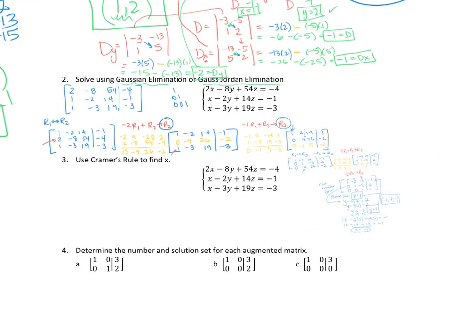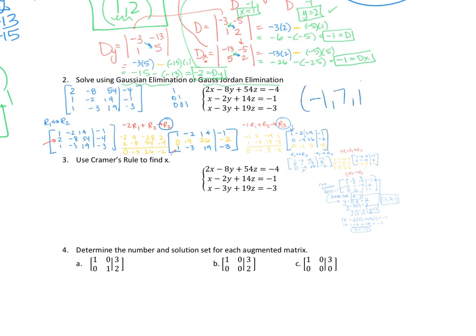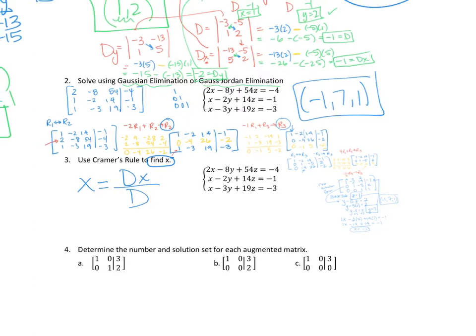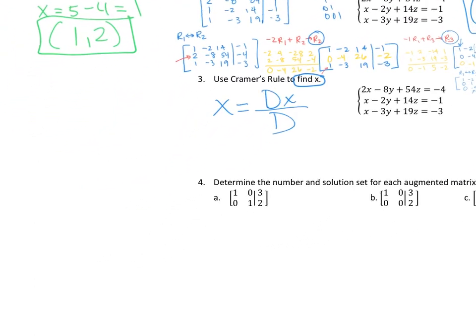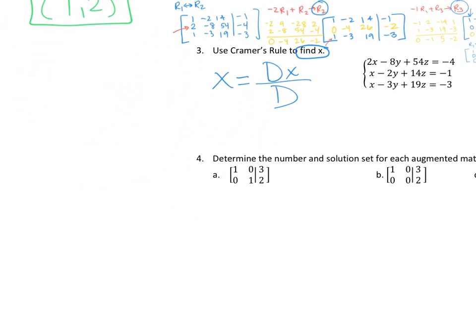For number 3, we use Cramer's Rule but only need to find x. That means we only need two determinants: the determinant of D (coefficients) and the determinant of Dx.